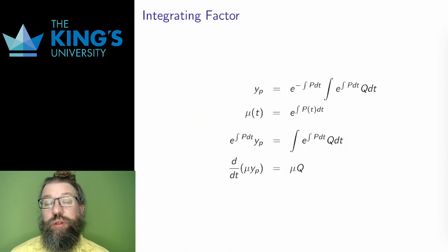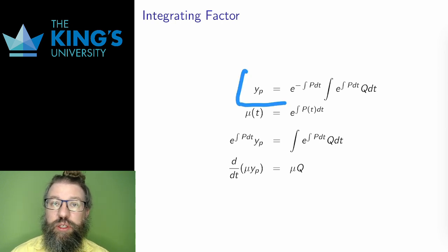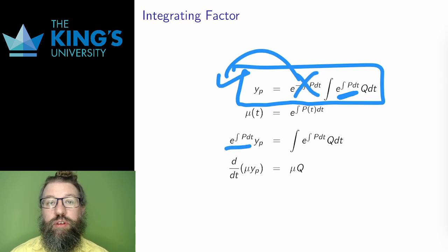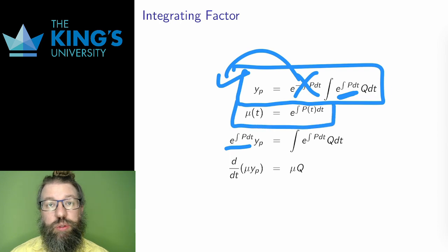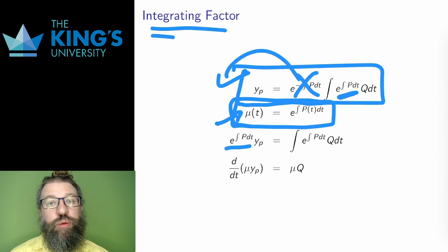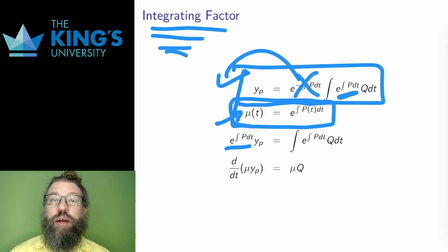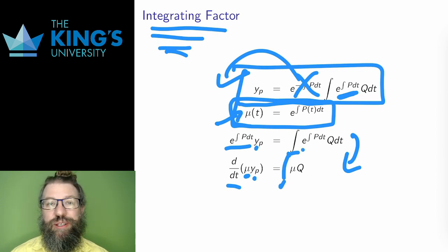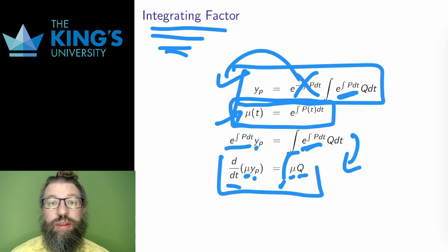How do we actually do these solutions? Let me think more about the particular solution. Before integrating Q, I multiply by e^(∫P dt). If I multiply both sides by that exponential, I can write: e^(∫P dt)·y_p = ∫e^(∫P dt)·Q. I'll call e^(∫P dt) the integrating factor μ(t) — this is the Greek letter mu — and it's essentially what we'll use to calculate solutions. Differentiating gives d/dt(μ·y) = μ·Q, and I'll try to turn all my linear differential equations into this form.